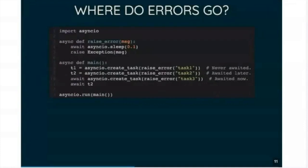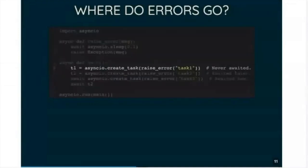So the first one, we call create task, we assign it to a variable, and then we just never wait for it. So the error from this task, just nothing ever catches it. There's nowhere else in the program for it to go because we never wait for it to finish. So the error for this one will get lost.